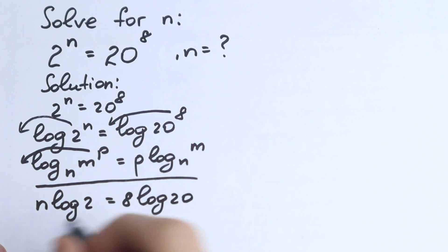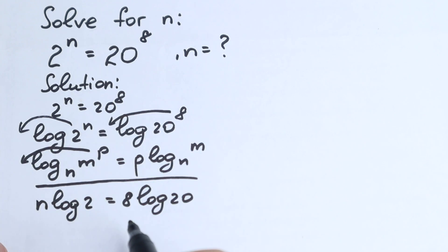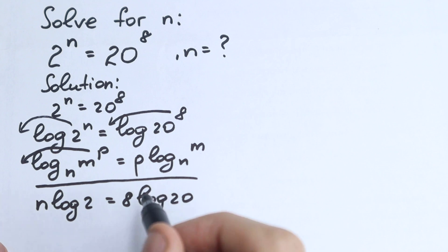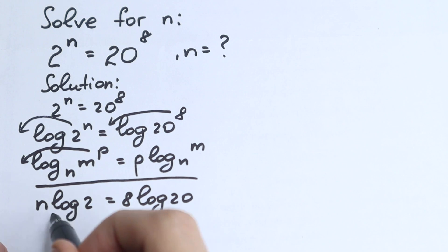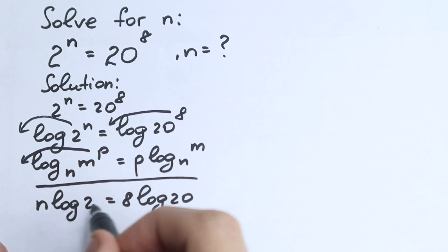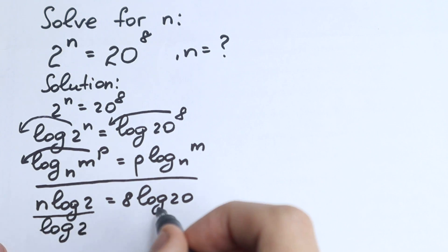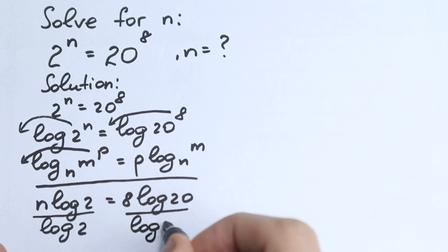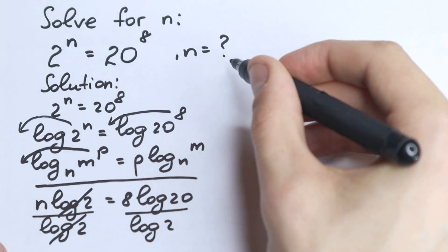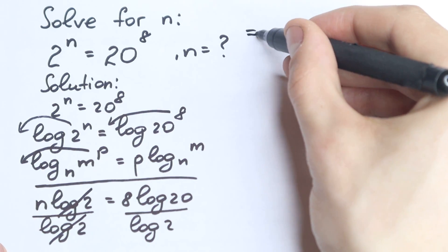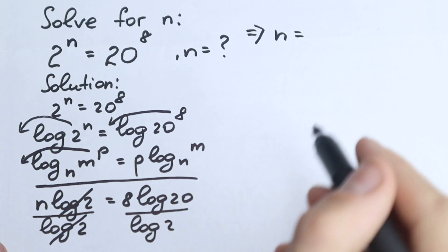After this first step we have n log 2 equals 8 log 20. What we do next is divide both sides by log 2 to isolate n. We divide the left side by log 2, canceling it out, and divide the right hand side by log 2. So we have n equals 8 log 20 over log 2.